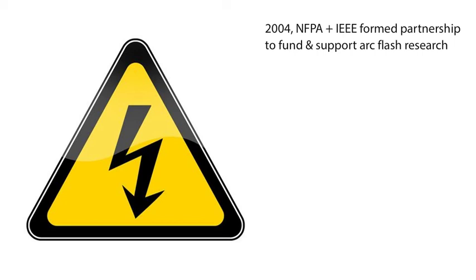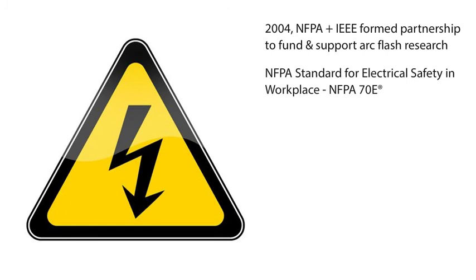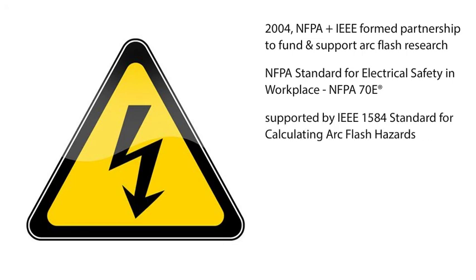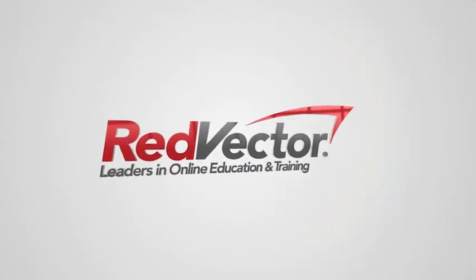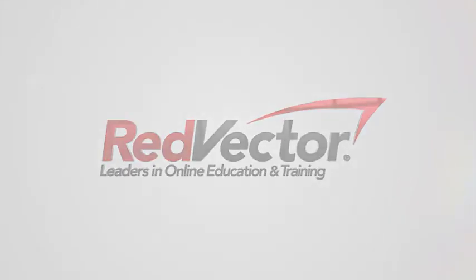NFPA and IEEE each have separate safety manuals that reinforce each other. The NFPA Standard for Electrical Safety in the Workplace, known as NFPA 70E, is supported by the IEEE 1584 standard for calculating arc flash hazards. Together, these two manuals illustrate how to comply with OSHA arc flash hazard safety standards.